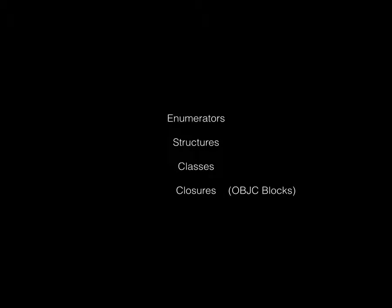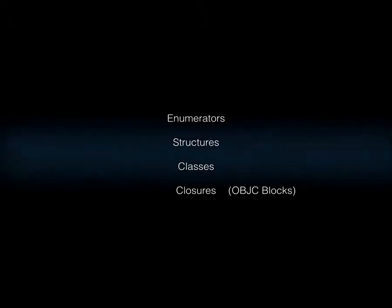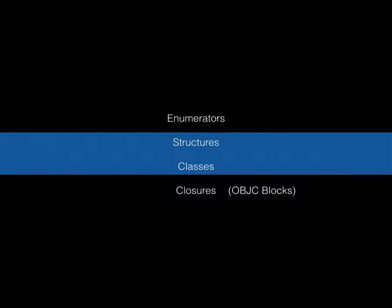Enumerators, structures, and classes have had a massive facelift in Swift — they're almost the same thing. Enumerators can now have methods, and structures can now have methods as well as properties. This means enumerators can contain values and also have methods to process them. How many times did you have to write a switching case to convert an enumerator into a string? Now you can build a `toString` method on your enumerator and that method will automatically switch and print it out. Classes and structures are almost identical in Swift with one big difference.